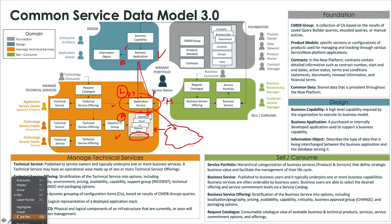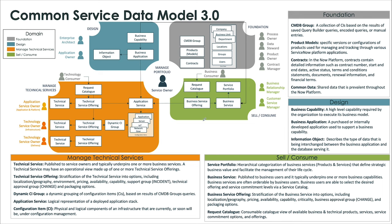If you do have an established, well-managed set of services, you can do this path through either technical service or business service. But we do find that a lot of organizations do not have their dynamic CI group set up yet, and they do not have offerings. There's a bit of a warning sign when you're trying to start from a service point of view, because if you don't have the offerings established, this is going to be an area where you want to establish. You don't want to skip over this — because this is where your SLA, OLA, and commitments are all stored on the offering level.